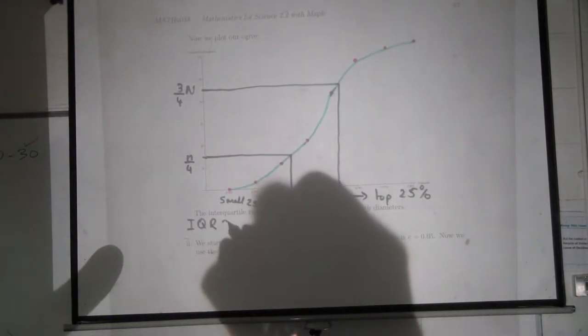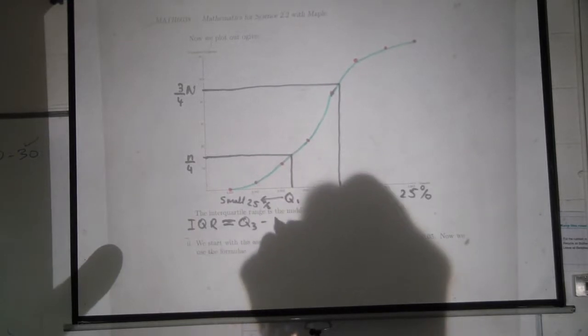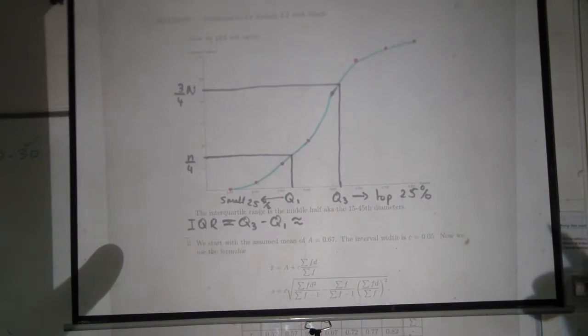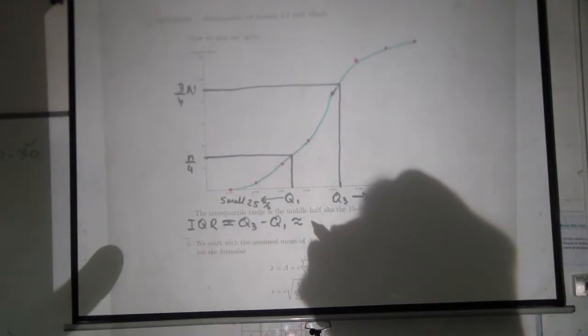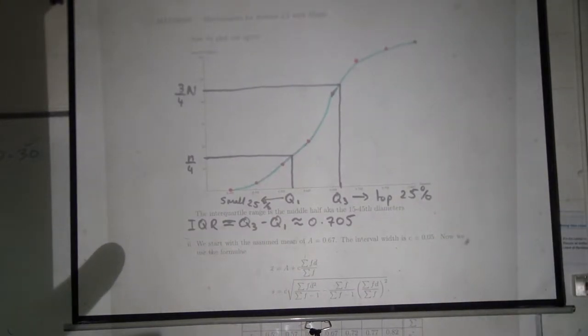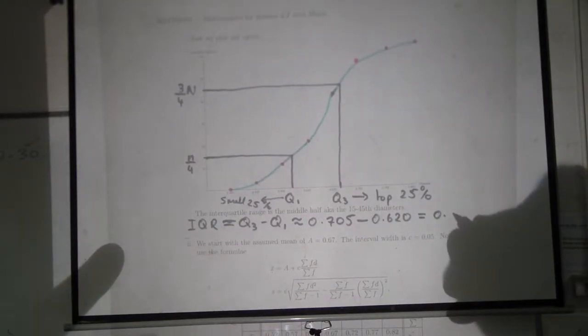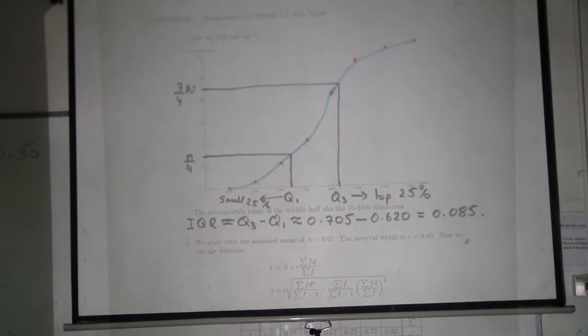If you have graph paper, this will be a lot easier. So IQR equals Q3 minus Q1. Let's say Q3 is about 0.705, and Q1 is maybe halfway, something like 0.62. So 0.085. That's the difference between the top 25% and the bottom 25%. If that's small, the data, certainly around the middle, is not that spread out.